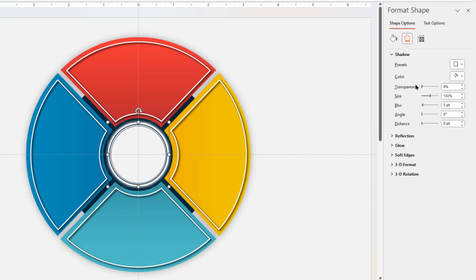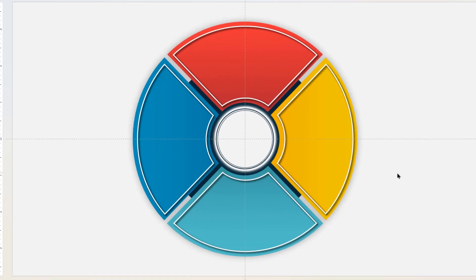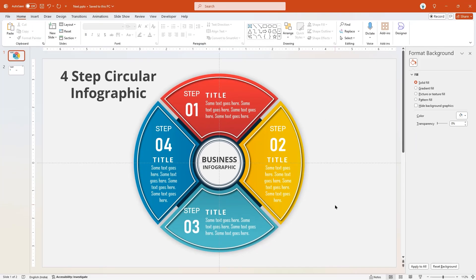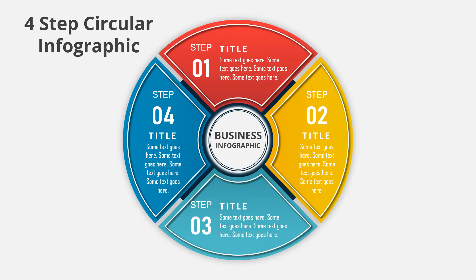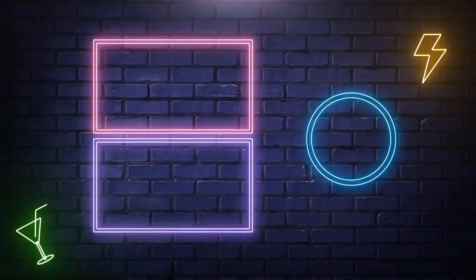Also apply an outer shadow effect to the center circle shape — change the shadow color to white and set its transparency to zero percent. Finally, add all text fields to finalize the design. Here is the final preview of this beautiful infographic. Hope you all liked it — please don't forget to subscribe for more such tutorials. Stay tuned and see you next time!